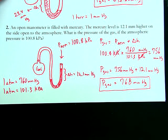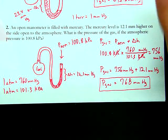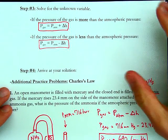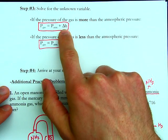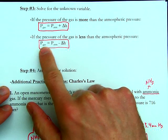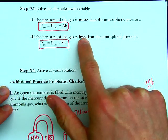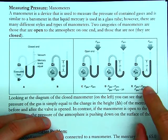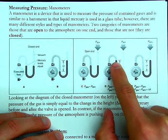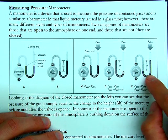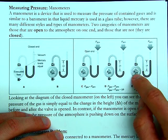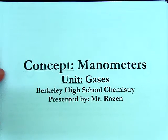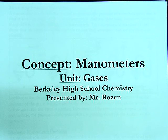This is the general idea with manometer problems. The key takeaway: P_gas equals P_atm plus delta H when gas pressure is greater than atmospheric, and P_gas equals P_atm minus delta H when gas pressure is less. When mercury is higher on the gas side, atmospheric pressure is greater; when mercury is higher on the atmospheric side, gas pressure is greater. This has been a discussion about gas manometers — keep on working, see you in class.